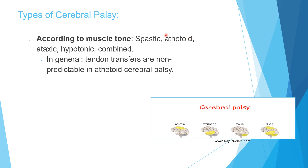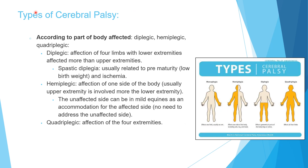Athetoid, sometimes called dyskinetic cerebral palsy, is the second most common type. It means the child has abnormal motion, the most common of which is dystonia. Tendon transfers are not predictable in athetoid cerebral palsy, so results are not as good as in spastic. Less common types include ataxic, hypotonic, and combined.